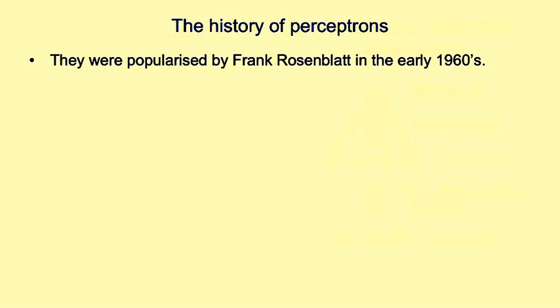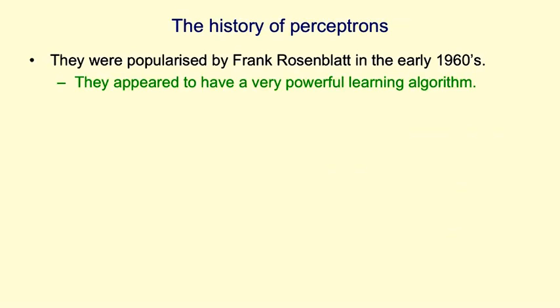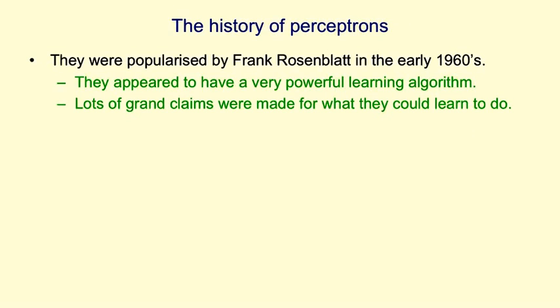Perceptrons have an interesting history. They were popularised in the early 1960s by Frank Rosenblatt, who wrote a book called Principles of Neurodynamics describing many different kinds of perceptrons. That book was full of ideas, and the most important thing in it was a very powerful learning algorithm, or something that appeared to be a very powerful learning algorithm. A lot of grand claims were made — for example, people claimed perceptrons could tell the difference between pictures of tanks and pictures of trucks, even if they were partially obscured in a forest.